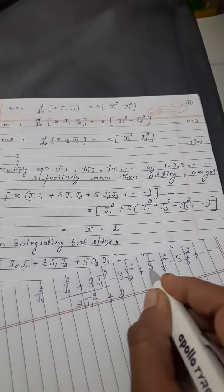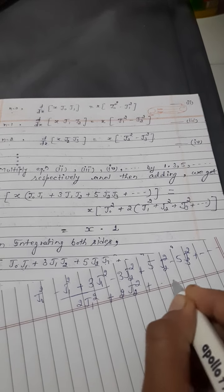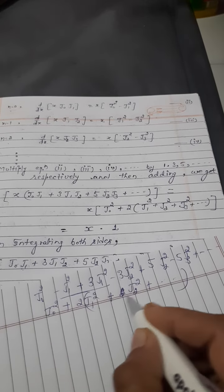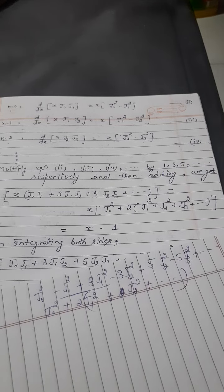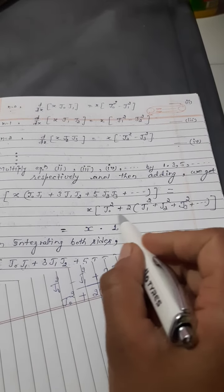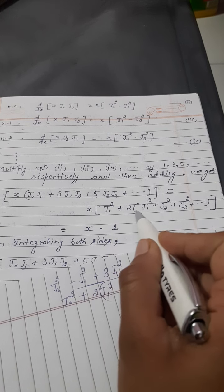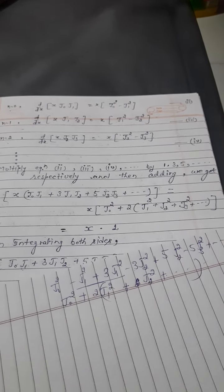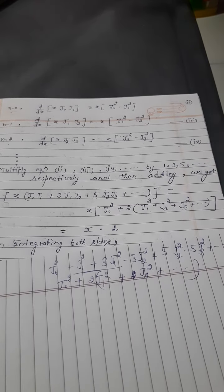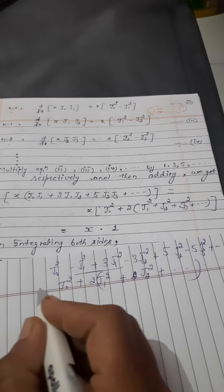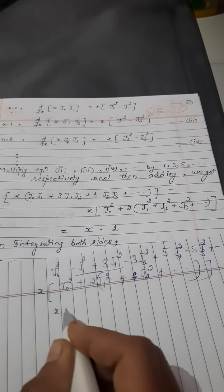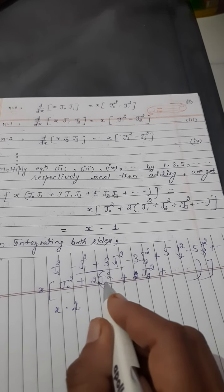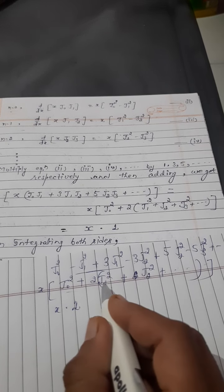2 common लेने पर right side हो जाएगा: J₀² plus 2·(J₁² + J₂² + J₃² + ...). Left side में x common है। So d/dx[x·(J₀J₁ + 3J₁J₂ + 5J₂J₃ + ...)] = x·[J₀² + 2(J₁² + J₂² + ...)] which equals x into 1, since J₀² + 2(J₁² + J₂²+...) = 1.